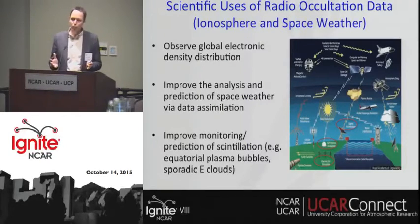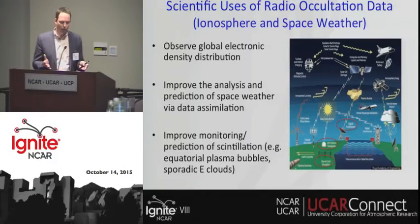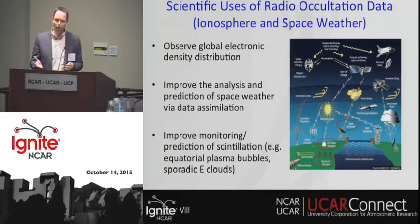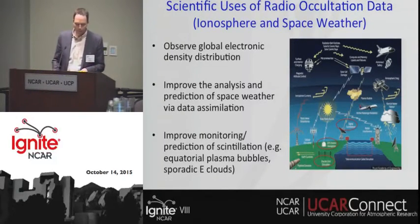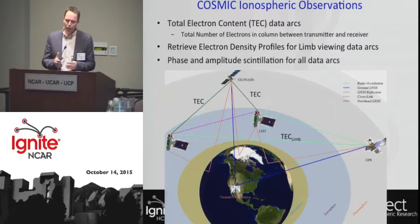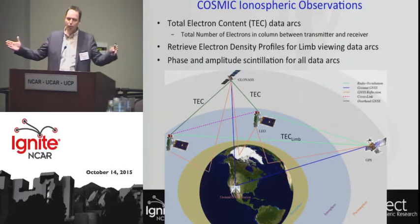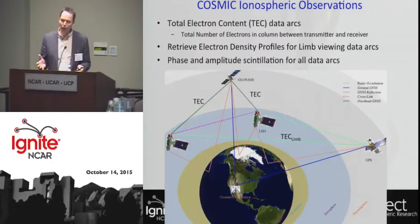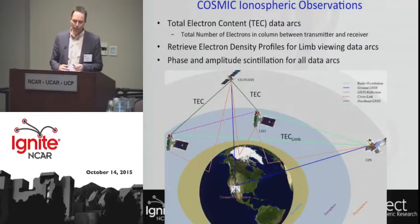In terms of space weather, we want to observe the global electron density distribution, improve our ability to forecast space weather with data assimilation, and understand more about scintillation. The COSMIC ionospheric observations are total electron content — really the total number of electrons between the receiver and the transmitter. We can use those data to invert and get electron density profiles, as well as other scintillation information.